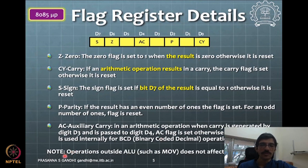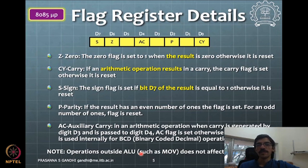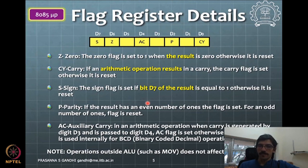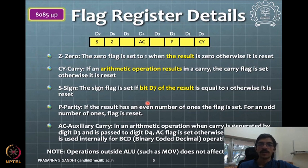Some notes will be given like 'operation outside ALU', such as the move command — move contents from one register to another — which will not affect the flag. Each command, or instruction set, gives details of what that instruction does in the microcontroller. Typically while giving those details they will indicate whether some bit in the flag register is set, reset, or unchanged — that will be given as part of the instruction details.